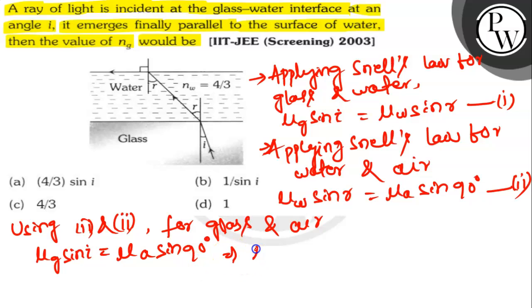Here μG sin I is equal to 1 into 1. So μG will be 1 by sin I. This is our answer. Option number B is the correct answer. Thank you.